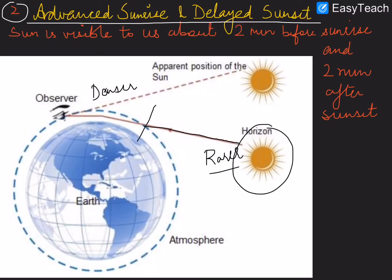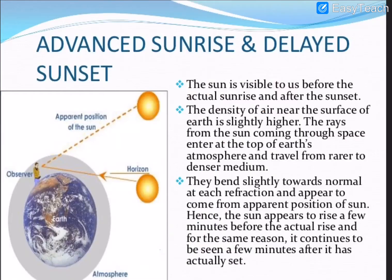Drawing a normal, the ray going from rarer to denser bends towards the normal at each layer. Extending this dotted line, it appears as if the sun is already above the horizon even though it has not actually risen yet. The same effect occurs during sunset — due to atmospheric refraction, the sun appears to be present even after it has actually set.